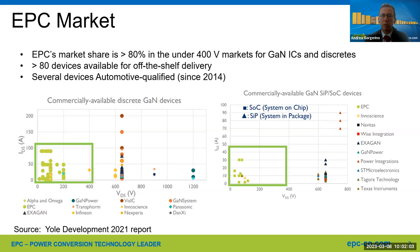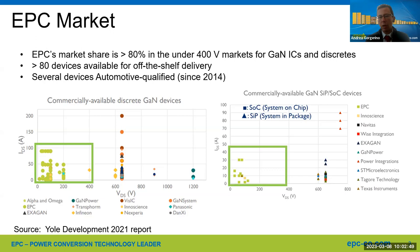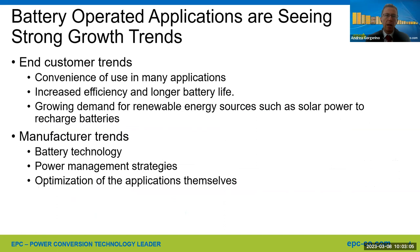EPC's market share is more than 80% in the under-400-volt market for GaN ICs and discretes. These two charts tell the story: discrete GaN devices on the left, IC GaN devices on the right, with voltage class on the x-axis. In the 400-volt-and-below range where EPC's product line sits, green dots — EPC products — dominate. We have more than 80 devices available, including several automotive-grade ones.